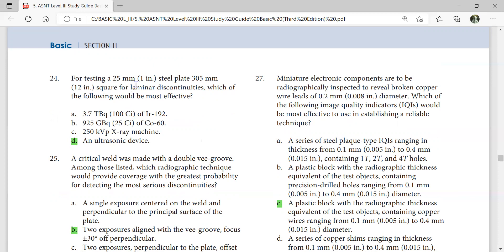For testing 25 mm steel plate for laminar discontinuities, which of the following would be most effective? Ultrasonic device. Miniature electronic components are to be radiographically inspected to reveal broken copper wire leads 0.2 mm (0.001 inch) diameter. Which of the following image quality indicators will be most effective to use in establishing a reliable technique? A plastic block with radiographic thickness equivalent to the test object containing copper wires ranging from 0.1 mm to 0.4 mm diameter.